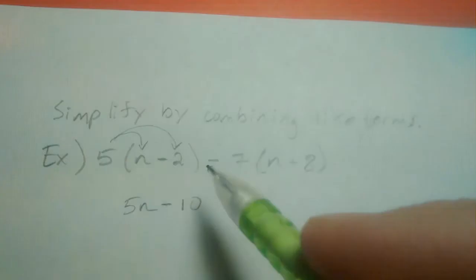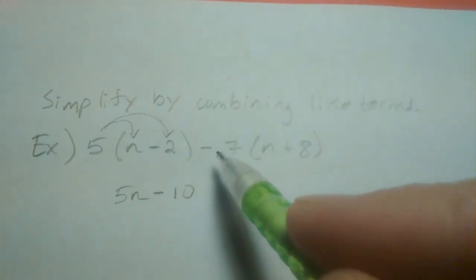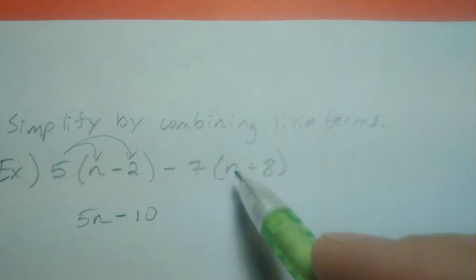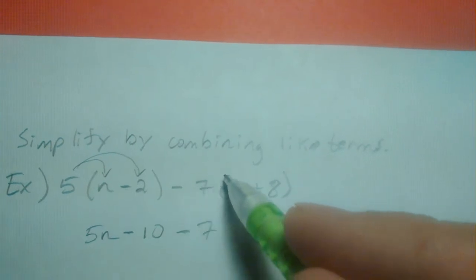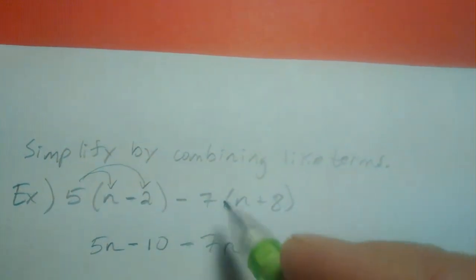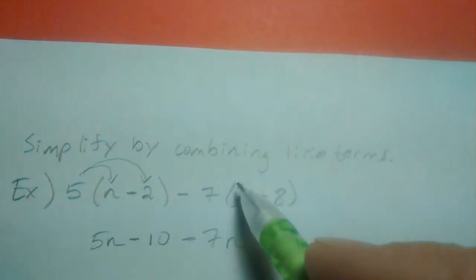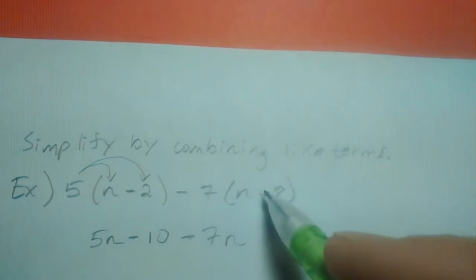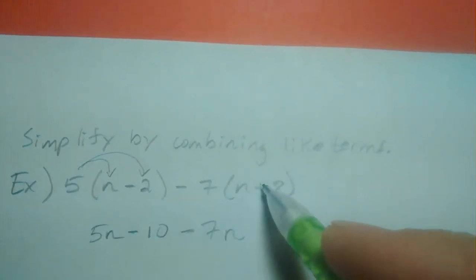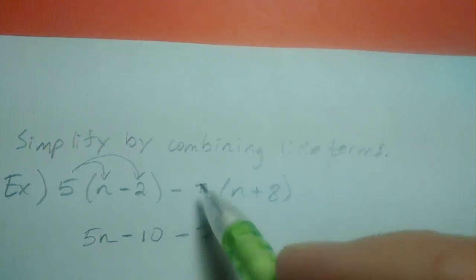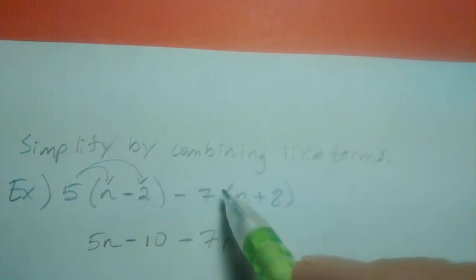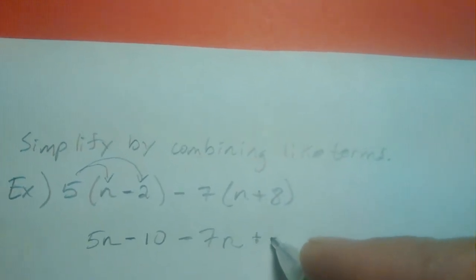So that one was the easy part. Let's look at the subtraction of 7 times each of these. So here we have the subtraction of 7 multiplied with n. And then the subtraction of 7 multiplied with this addition of 8. The best way to think of this is to keep the operation of addition here and to realize the subtraction of 7 times 8 can be written this way.